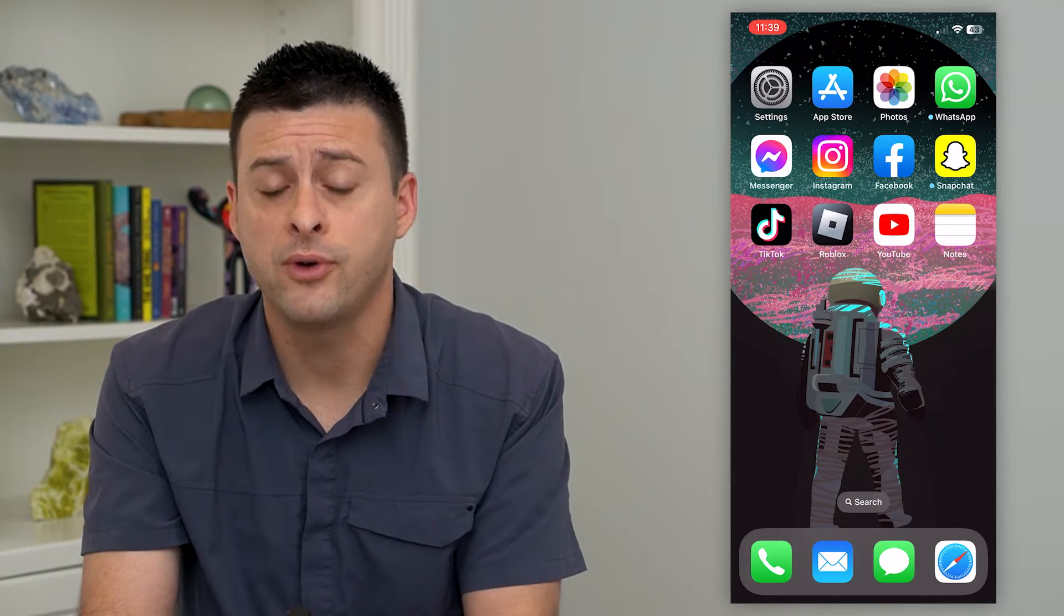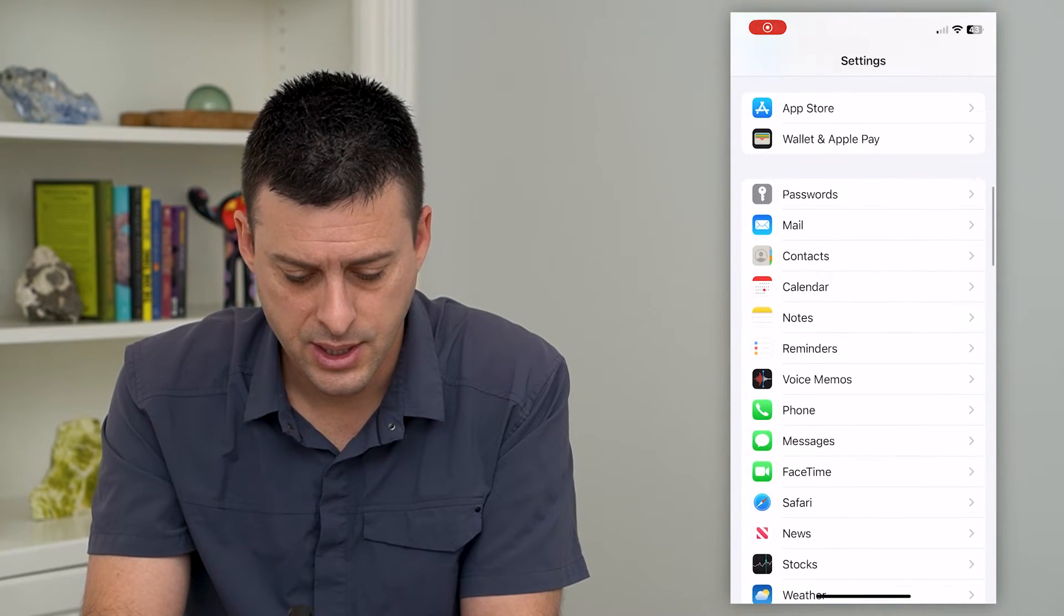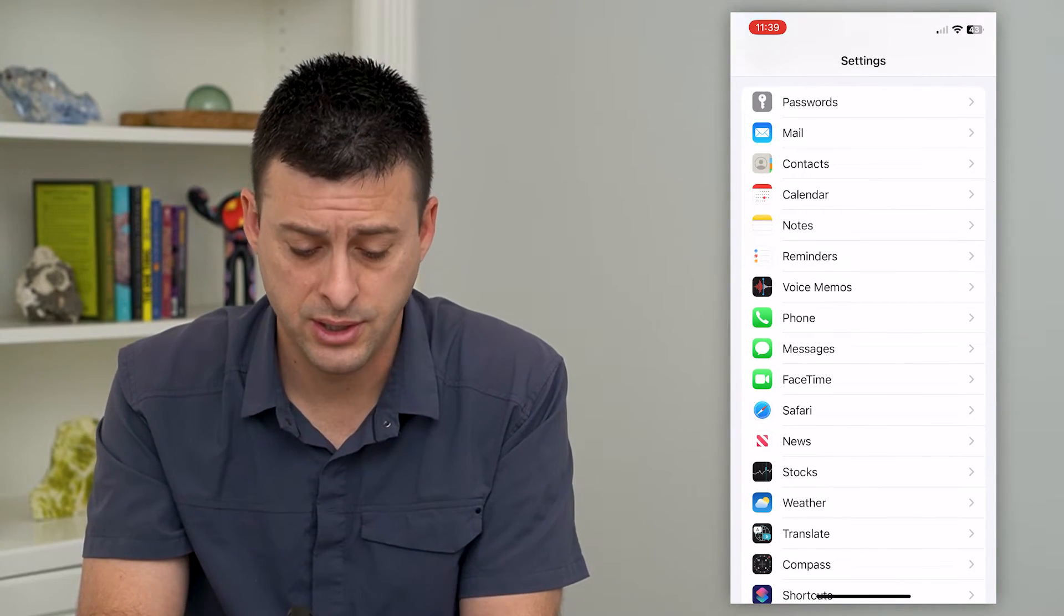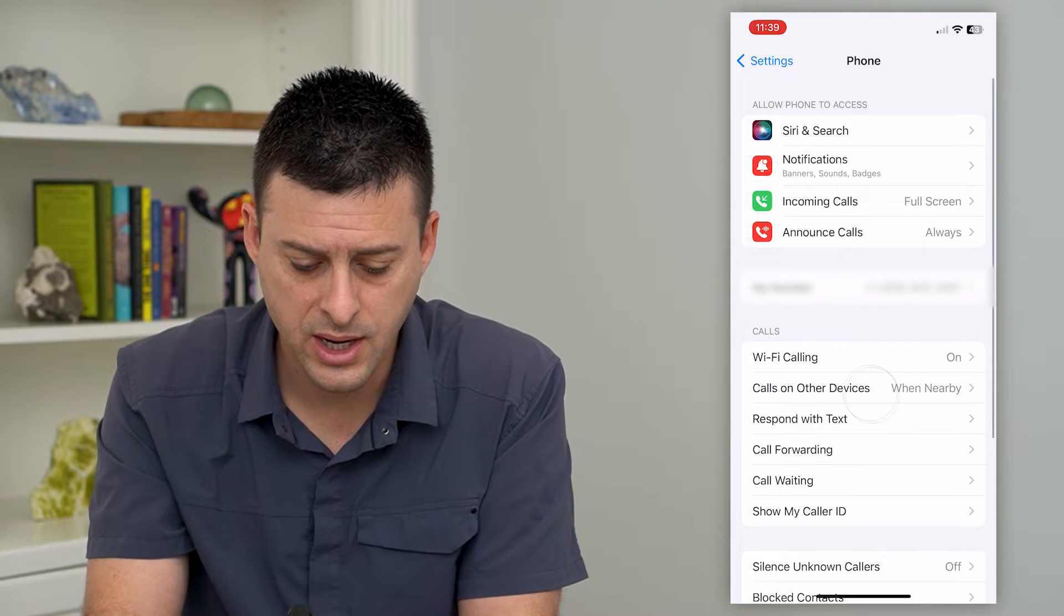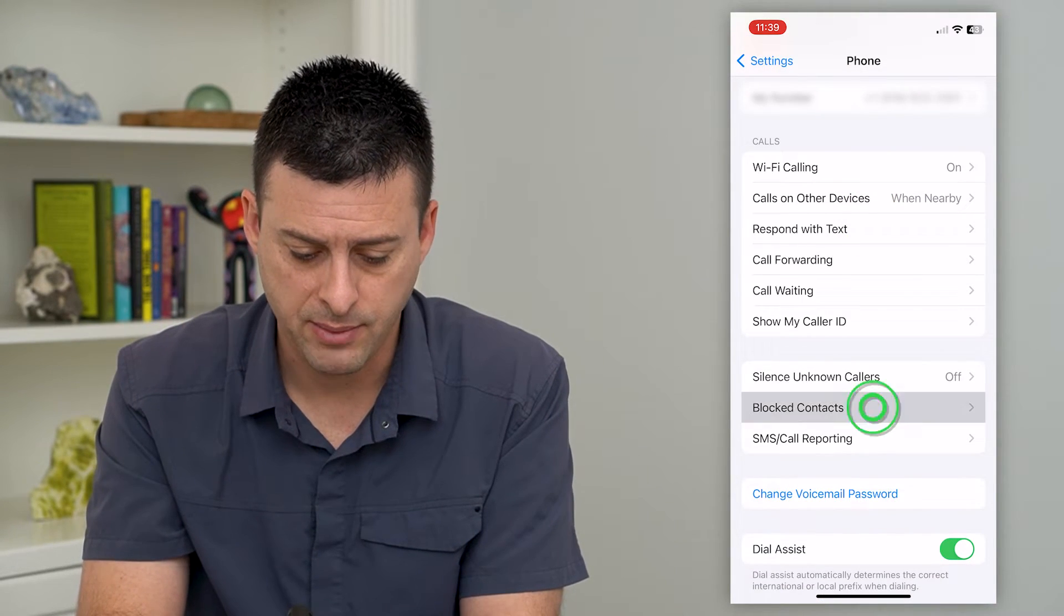To remove all of those, let's just hop into your settings and we'll scroll down until we get to Phone here and tap on that. Then again, we'll scroll down until we get to Blocked Contacts and tap on that.